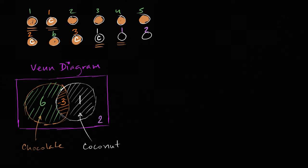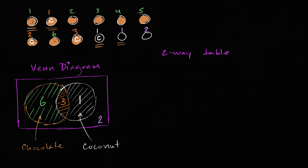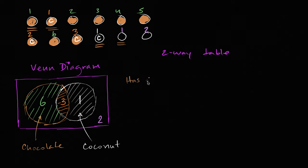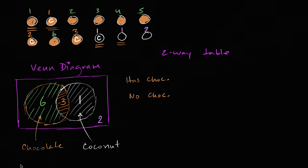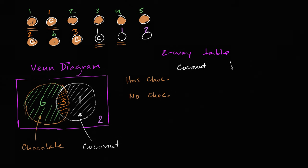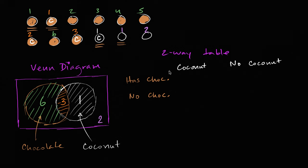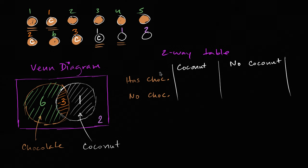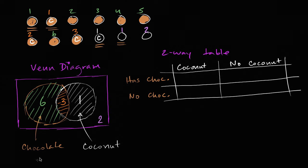But there are other ways we could do it. Another way to do it would be with a two-way table. On one axis — say the vertical axis — we could write: has chocolate, no chocolate. And then over here I could write coconut and no coconut. Let me make a table to make it clear what I'm doing here.